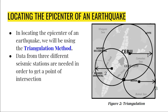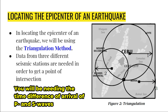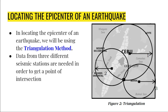P waves travel faster than S waves. This means that P waves will be received earlier at the seismic stations than the S waves. Therefore, there would be a time difference, and this time difference will help us identify the distance of the epicenter from the three seismic stations.